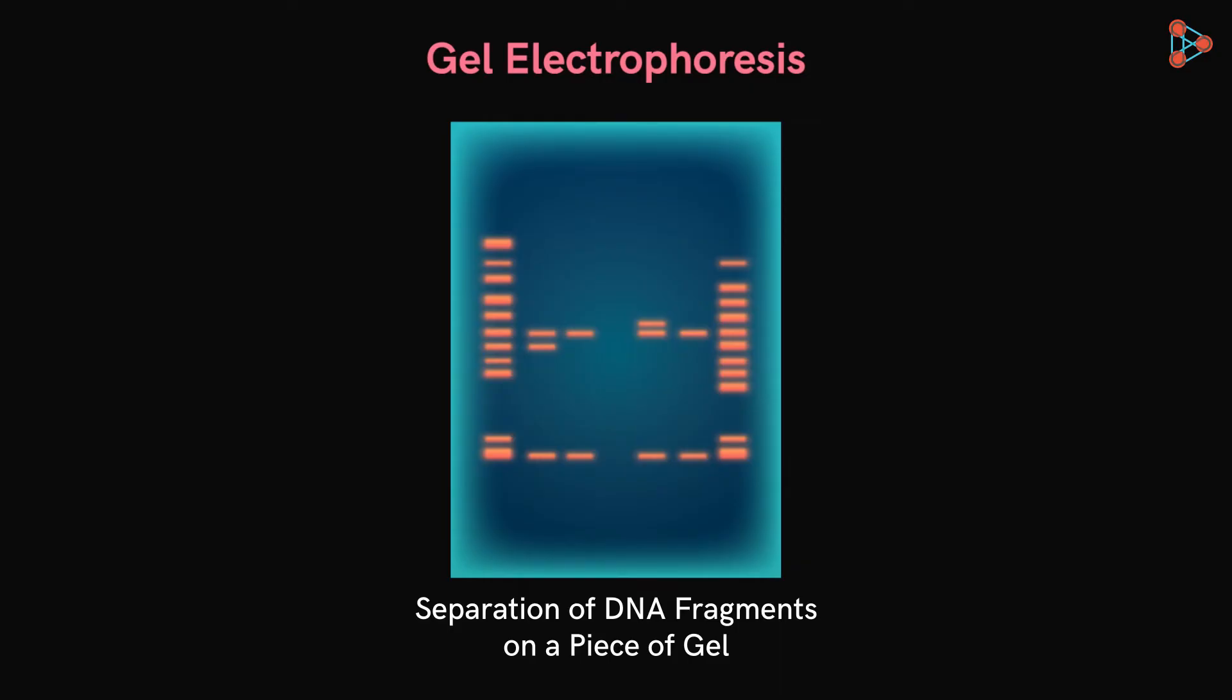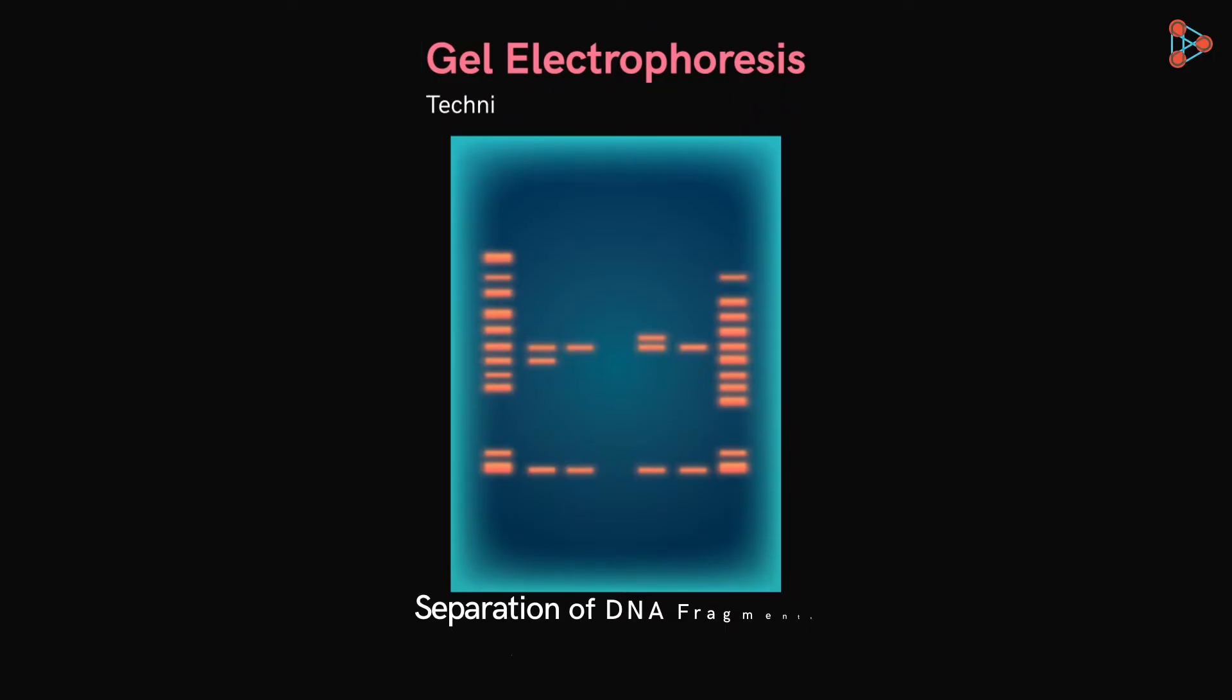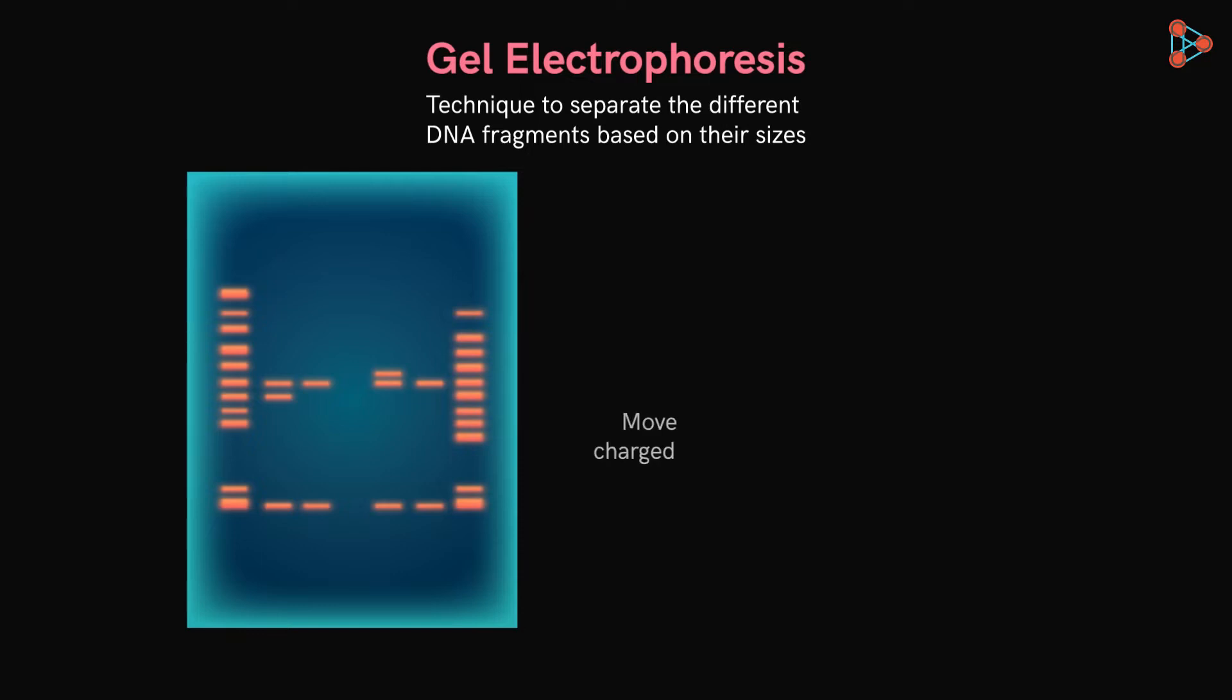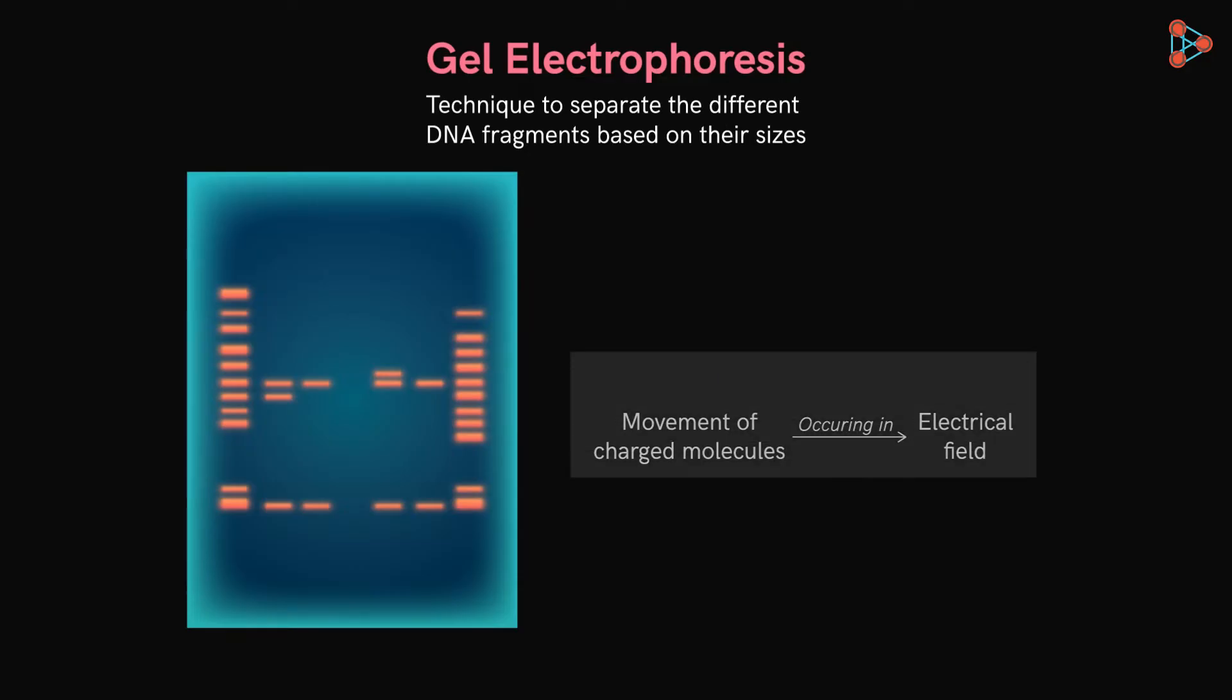Let's begin with the definition first. Gel electrophoresis is a technique to separate different DNA molecules based on their sizes. Can you guess why it's called gel electrophoresis? This separation technique is based on the movement of charged molecules when exposed to an electrical field, and this movement occurs in a gel medium. Hence, it's known as gel electrophoresis.